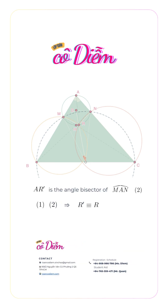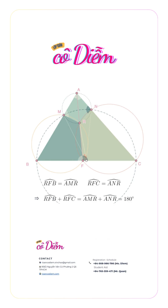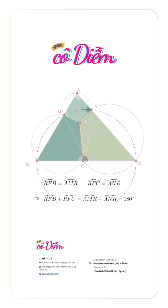From these two facts, R' coincides with R, the intersection of bisectors of angles BAC and MON. Let F be the intersection of the circumcircles of triangles BMR and CNR. We have angle RFB equals angle AMR, and angle RFC equals angle ANR. So the sum of angles RFB and RFC equals the sum of angles AMR and ANR, which equals 180 degrees, because quadrilateral AMRN is cyclic.